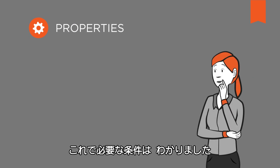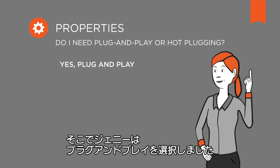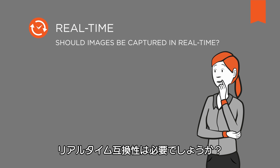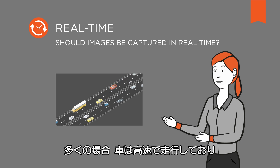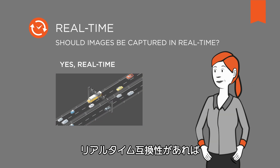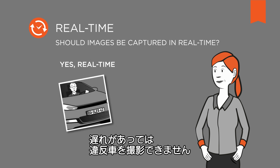So now we've got the key pieces in place. For cost reasons, the camera connection should be as quick and simple as possible — this directs Jenny towards a plug-and-play ready interface. Should images be captured in real time? In many cases, cars are driving much too fast on the roads. Real-time compatibility ensures that the images are acquired if, and only if, the measurement system detects a vehicle driving too quickly — but then without delay.